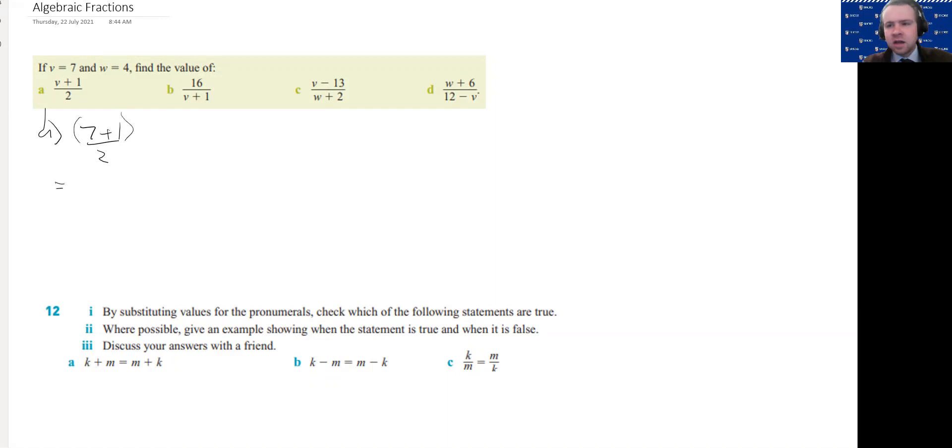That's the same as if that expression is on the bottom of the fraction, that line goes all the way across then that means there's brackets around all of those terms. If the line doesn't go all the way across then there is no brackets there. So we're going to do the 7 plus 1 first which is 8 over 2 which is then 8 divided by 2 which is 4. For b, v equals 7 as well so it's going to be 16 and then 7 plus 1. We've got to do what's on the bottom first because of the brackets and then we get 2.